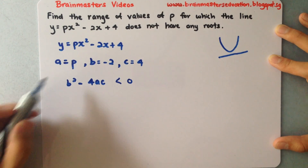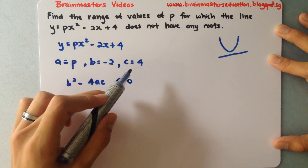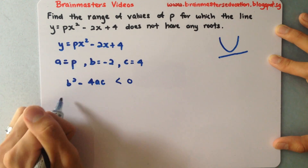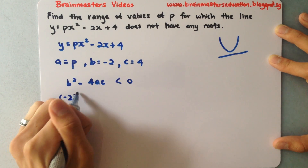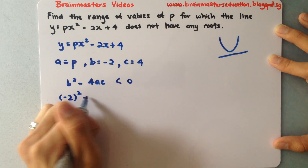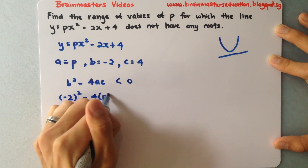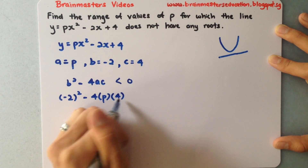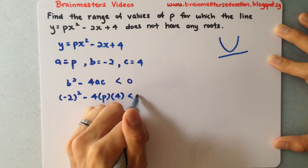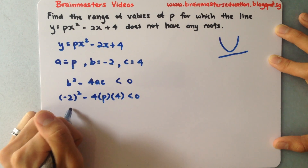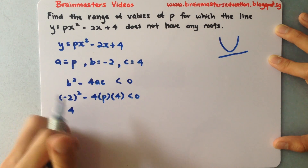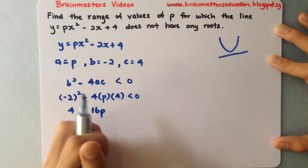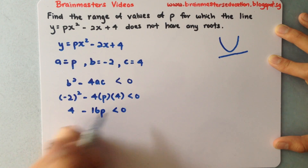So next, I'll substitute all the values in to work out for p. I'll have negative 2 squared minus 4 multiplied by p multiplied by c, and that is less than 0. Simplifying, I get 4 minus 16p is less than 0.